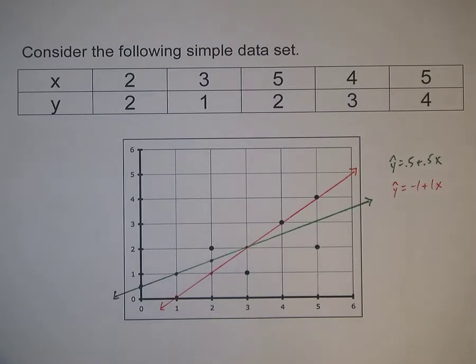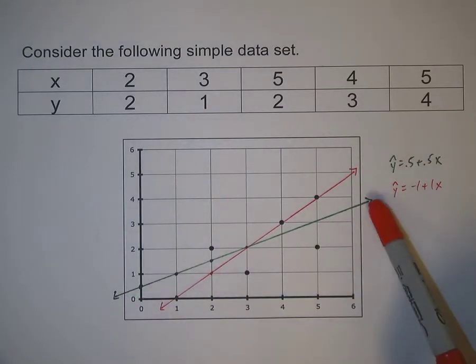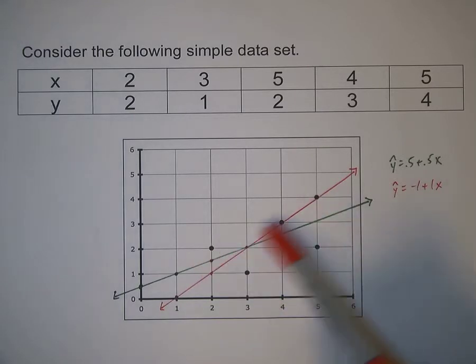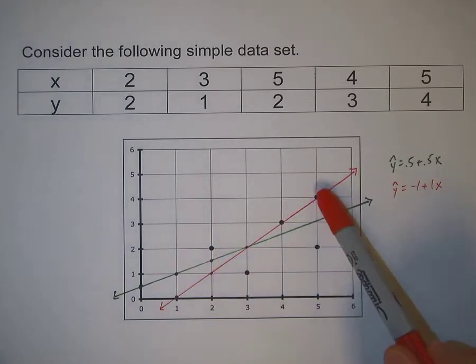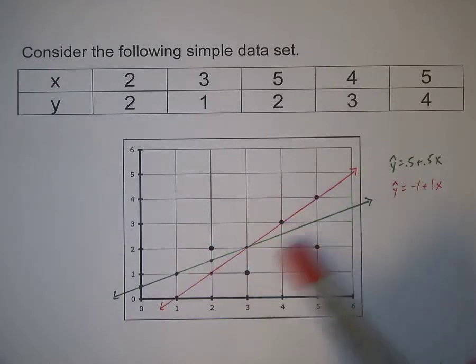To evaluate these two lines, the green one seems to do a pretty good job. We have two points below it and three points above it. The three points above are a little closer to the line than the two points below.